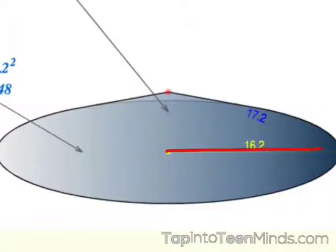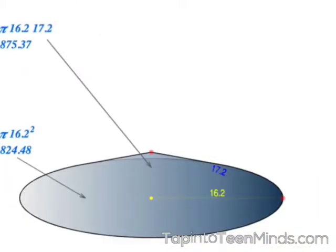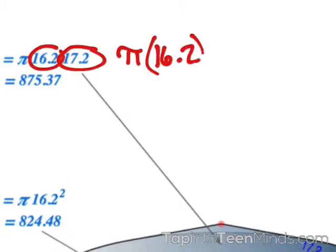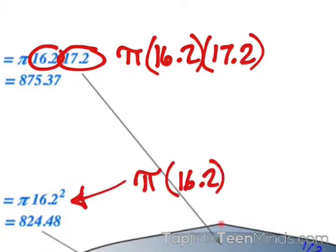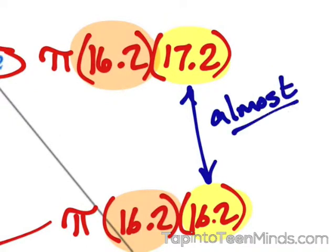First of all, you'll notice that the radius and the slant height are almost equal. Next, notice that the top formula, we have almost π r² for our lateral surface area and on the bottom we have π r² for our base. So the formulas are almost identical except our slant height is slightly larger than our radius.